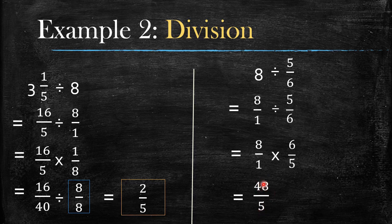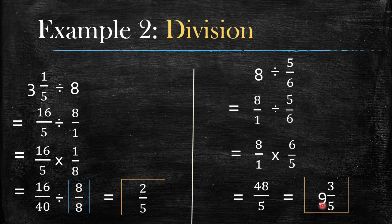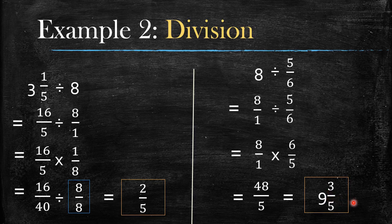When the numerator is bigger than the denominator, you use a different method rather than the highest common factor. Ask yourself: how many times does 5 go into 48? It goes in 9 times. How many numbers are left? 3 are left. So you make 3 the numerator and keep 5 as the denominator — the denominator never changes. Your final answer is 9 and 3 over 5. If unsure, just type 48 divided by 5 into your calculator and press the ABC button to get the same answer.